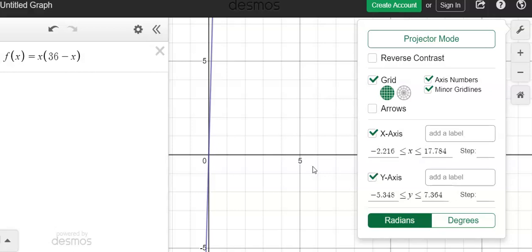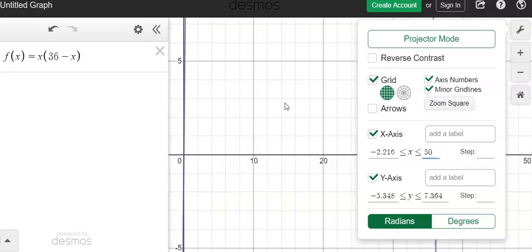I'm going to adjust my window so that I can see more of this graph. I'll start with the x-axis. This is telling me that I'm looking at from where x is negative 2 to where x is 17.784. I need this to increase to be a larger number so I can see further down the x-axis. So I'm going to type in 50 to see what happens there.